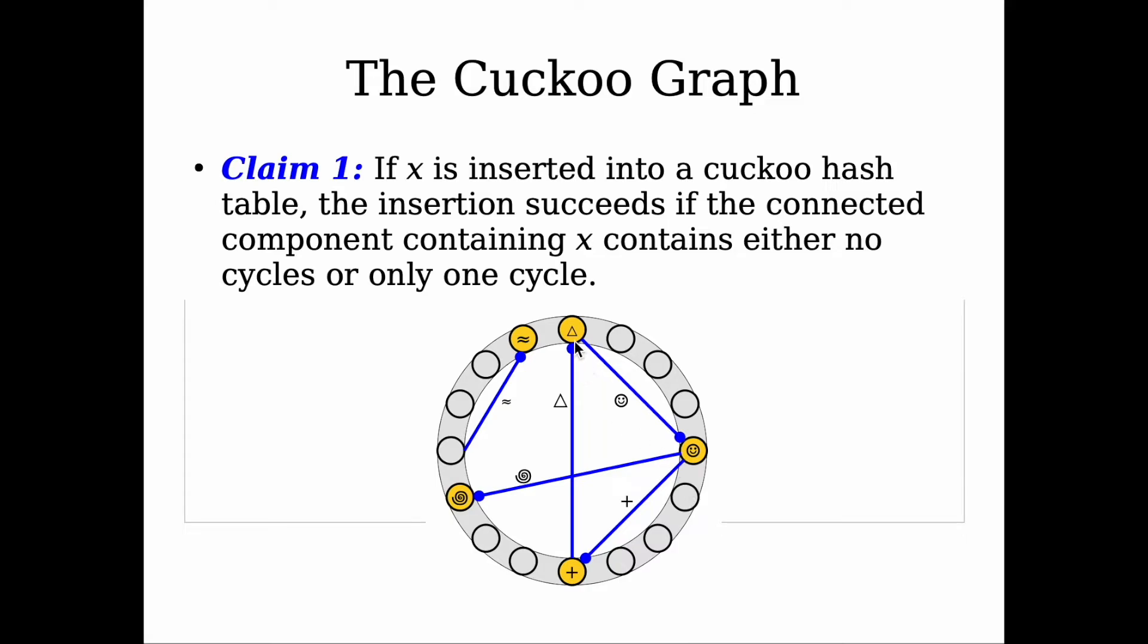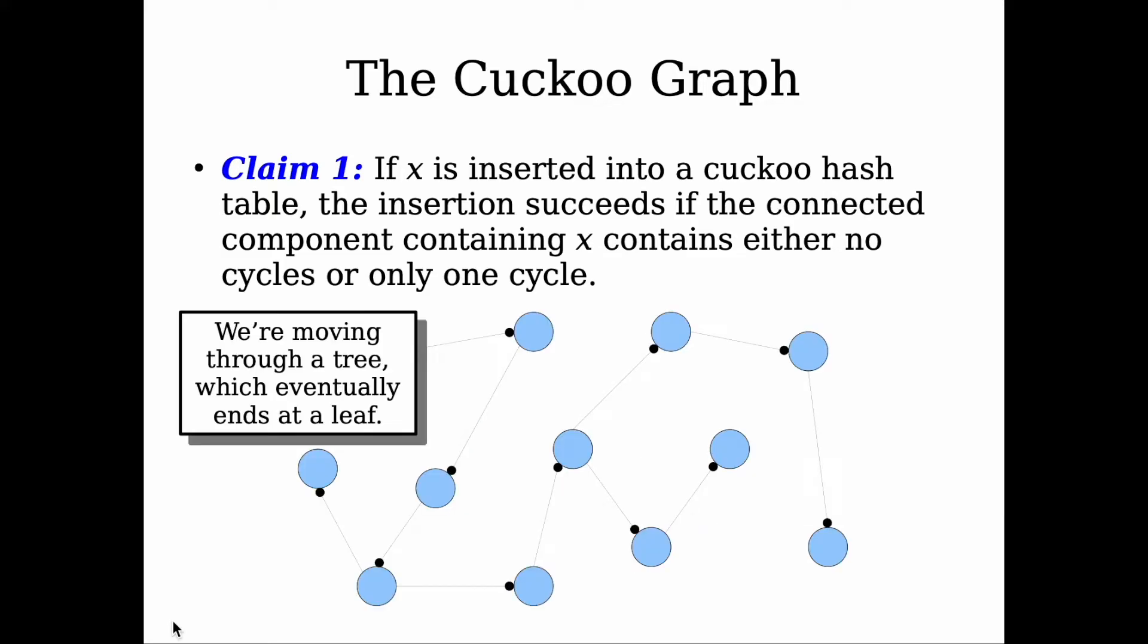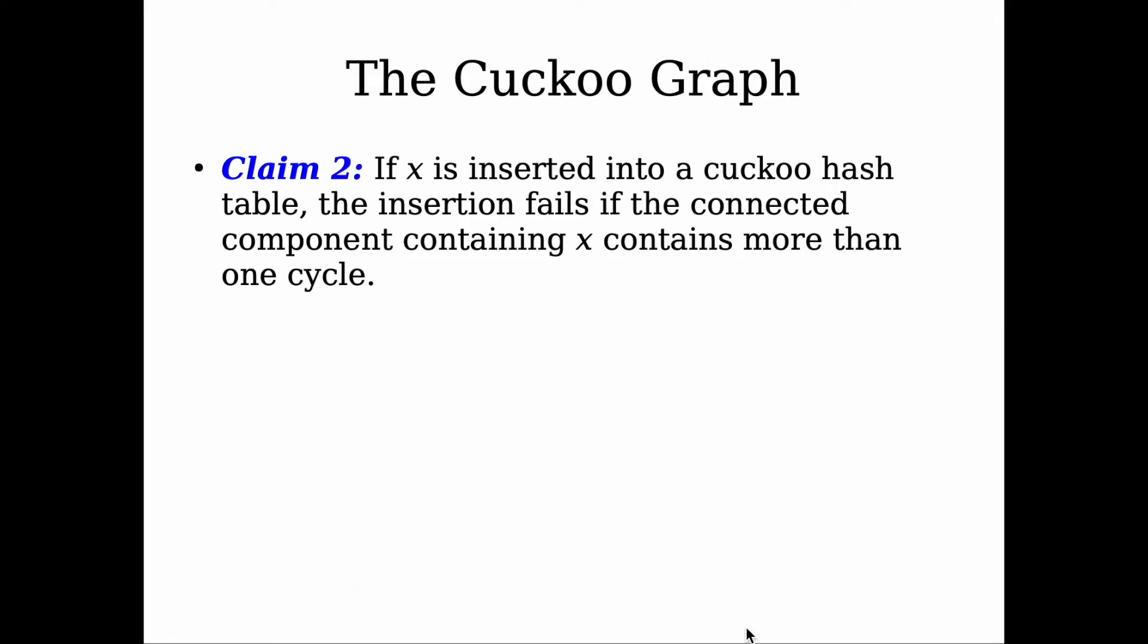So adding that one edge will create two cycles for this graph. Another way of looking at this is we keep adding a new node to a connected component with a tree structure, and then whenever we add a new node, that's the new leaf of the tree.